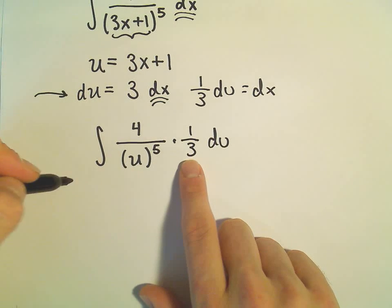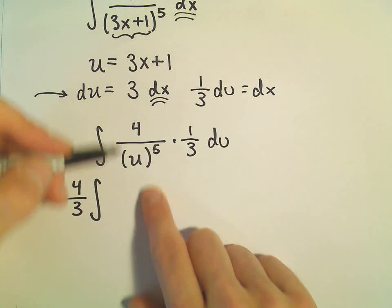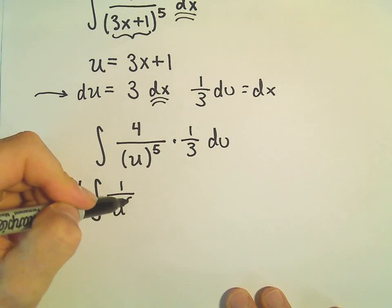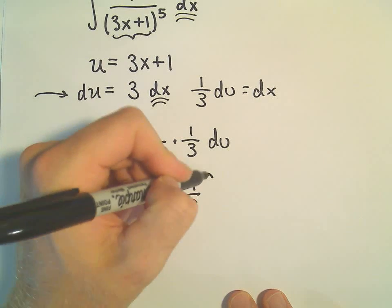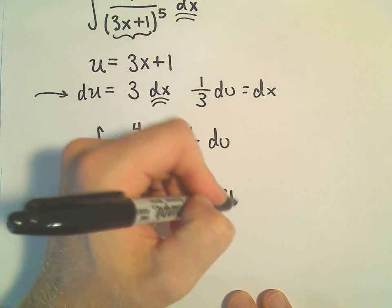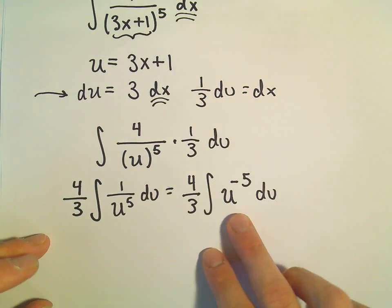And well, now we have 4 times 1/3, that's just a constant. We can pull that out front. We would be left with 1 over u to the 5th. And what I'm going to do now is just, again, what I wanted to at the very beginning, bring this up, and now I can integrate it just using the power rule.